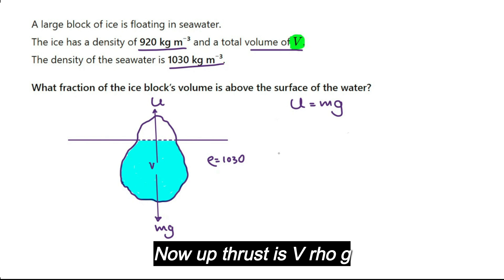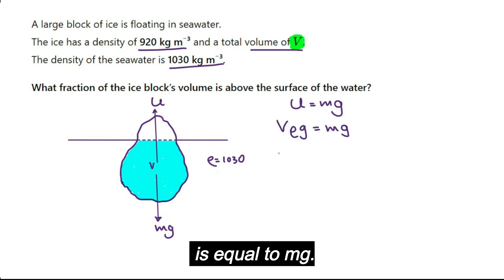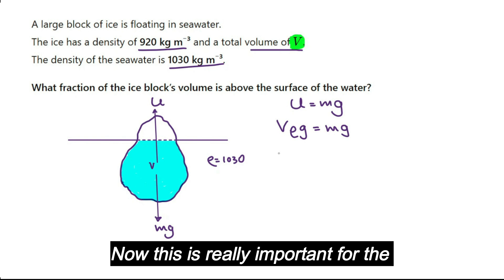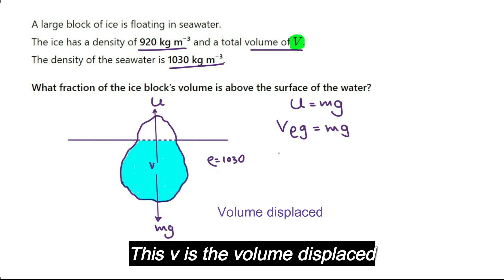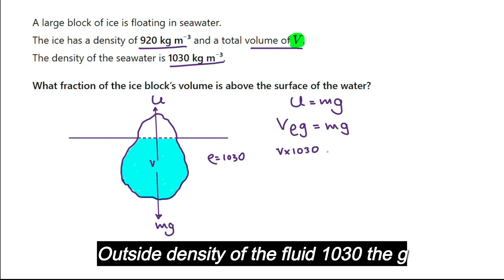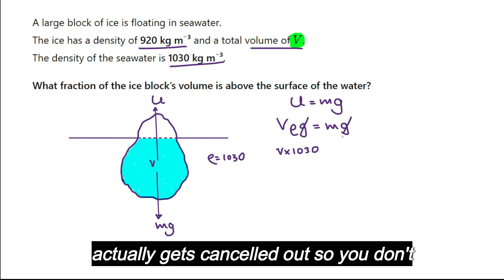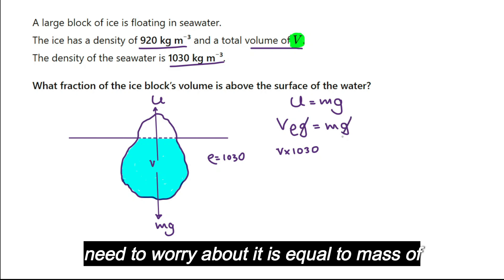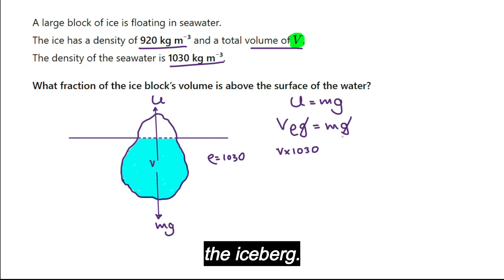Now upthrust is v·ρ·g equals mg. This is really important: for the upthrust, this v is the volume displaced, which is lowercase v times by density outside, density of the fluid 1030. The g actually gets cancelled out, so you don't need to worry about it. This equals the mass of the iceberg.